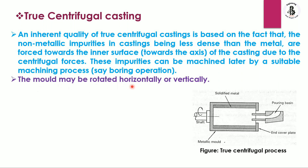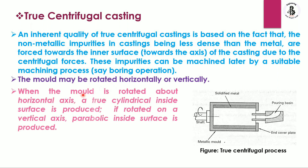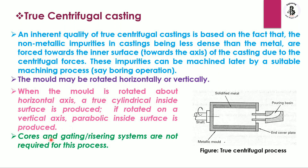The mold may be rotated horizontally or vertically — both are possible in true centrifugal casting. When the mold is rotated about a horizontal axis, a true cylindrical inside surface is produced. If rotated on a vertical axis, a parabolic inside surface is produced. Cores and gating systems are not required for this process, and hollow components can still be produced.